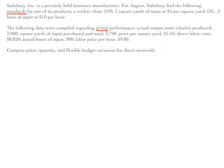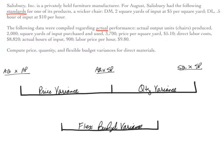The first thing we should do is draw the chart and label everything. Peg one is actual quantity times actual price. The story tells us actual quantity of materials purchased and used was 3,700 yards. The actual price per square yard was $5.10. So our actual cost is 3,700 × $5.10 = $18,870.